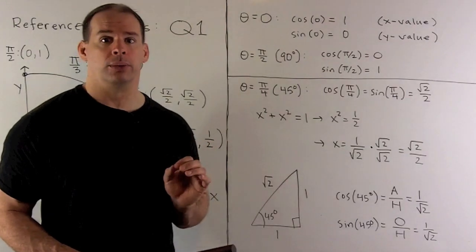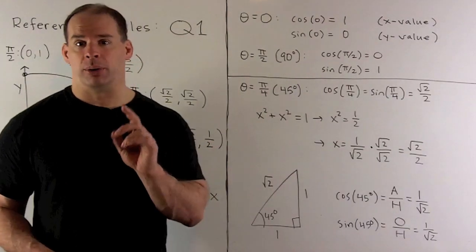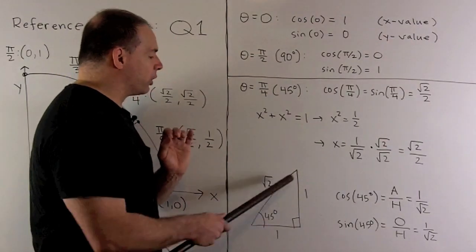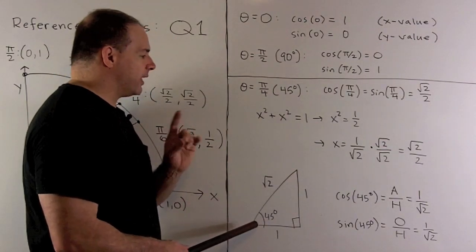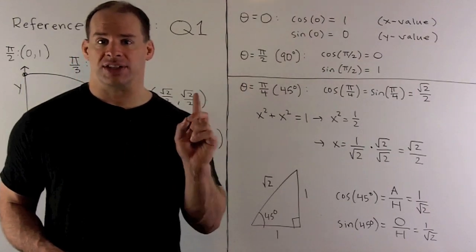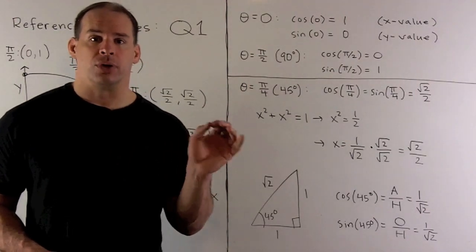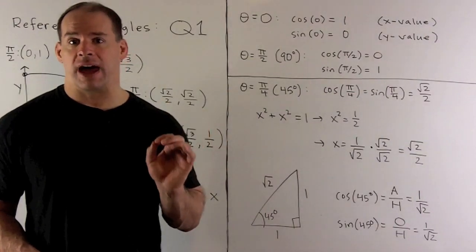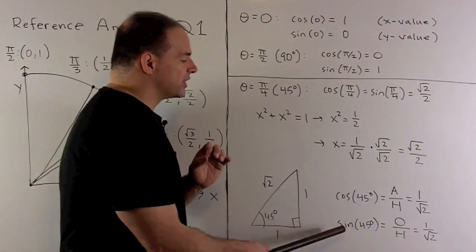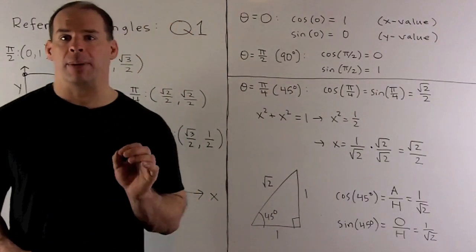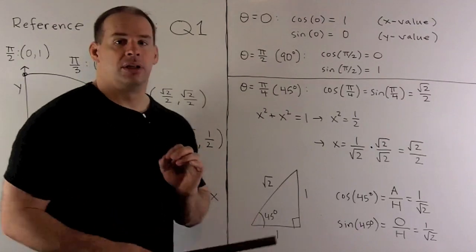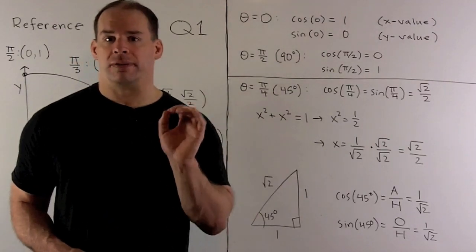If you want to put a picture to that, you have a right triangle with two 45-degree angles. You can verify using the right-triangle definitions: cosine is adjacent over hypotenuse, which is 1/√2, and sine is opposite over hypotenuse, also 1/√2. So that confirms cos(π/4) = sin(π/4) = √2/2.